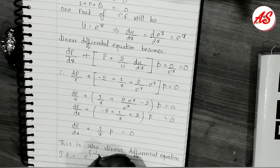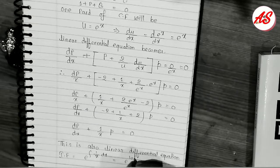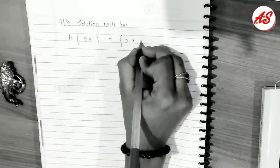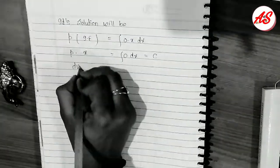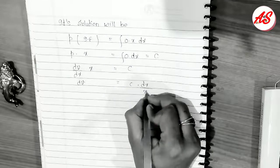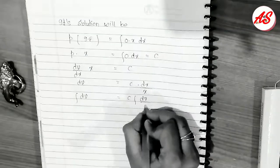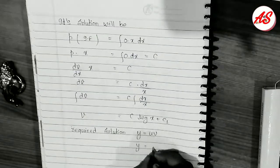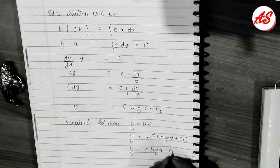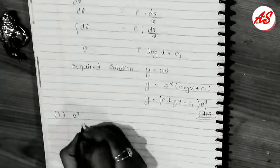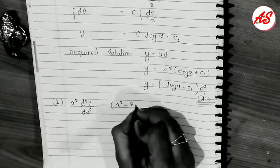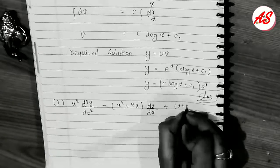This is also a linear differential equation. We find the integrating factor (IF), and the solution is p·(IF) = ∫Q·(IF) dx. Solving, we get v = c·log(x) + c₁. The required solution is y = u·v, substituting the values of u and v to get the final result.